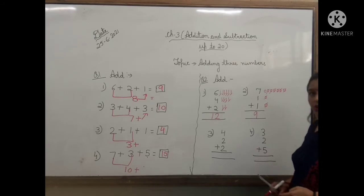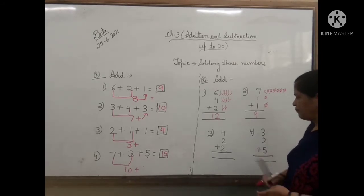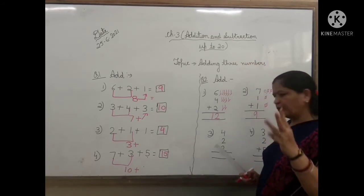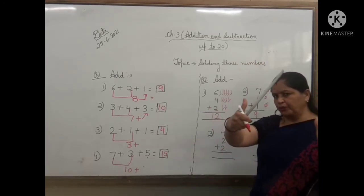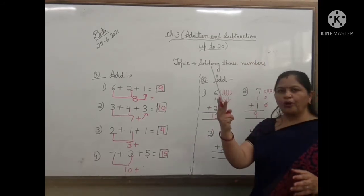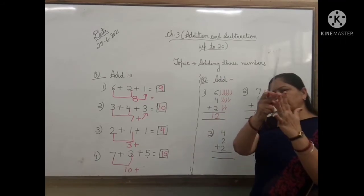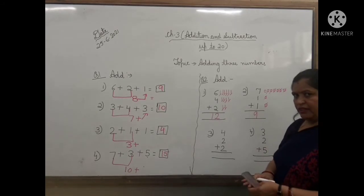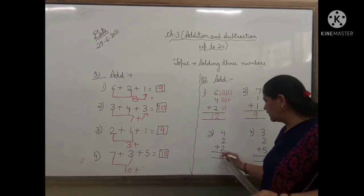4 plus 2 plus 2. You can count on the fingers. Number 4: 1, 2, 3, 4, 5, 6, 7, 8. So your answer will be 8.